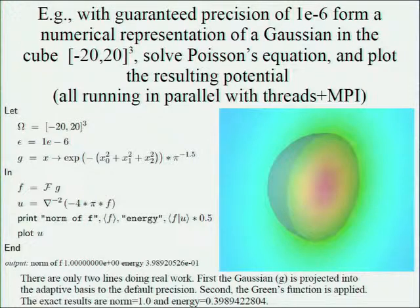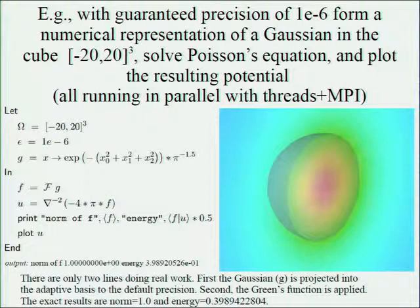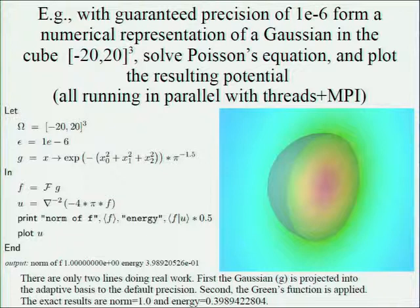Let me give you a flavor of the very highest level of composition of a program within Madness. This program basically just computes the electrostatic potential of a Gaussian to some finite precision in a box. The first step is to project this essentially analytic function into a numeric representation, which it does by adaptive refinement. Then we solve Poisson's equation — not by iterative solution of the differential equation, but by convolution with the Green's function, symbolically represented as operating with the inverse of the Laplacian. There are really only these two steps doing anything useful, but it gives you the flavor of the high level of composition.